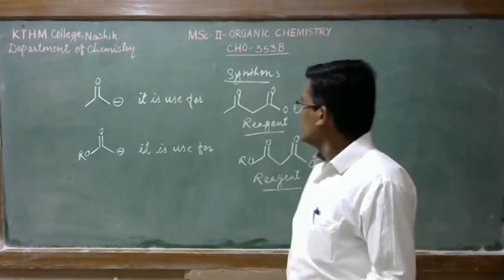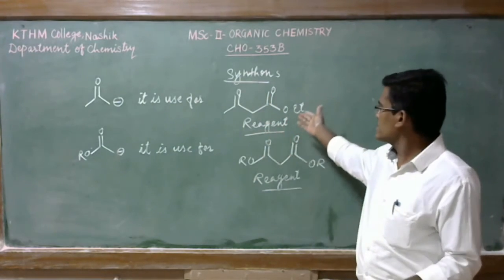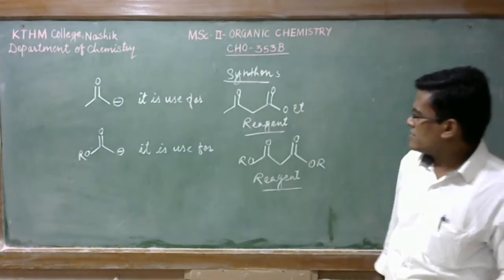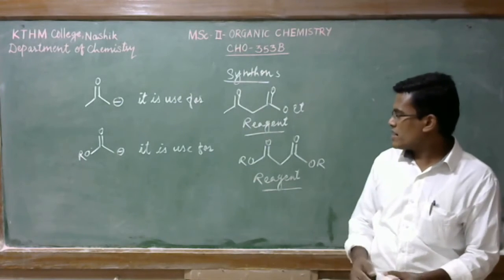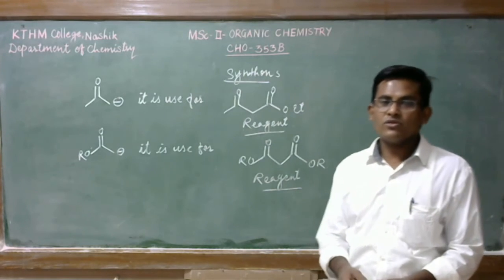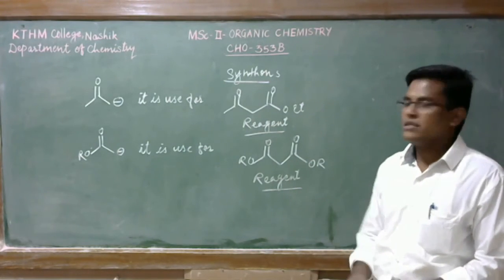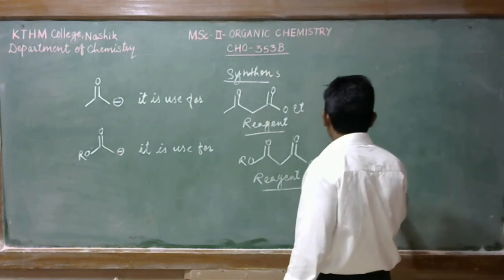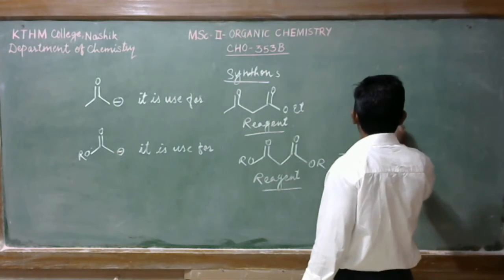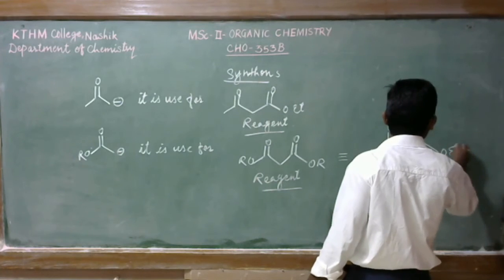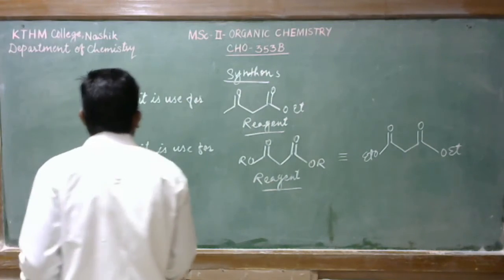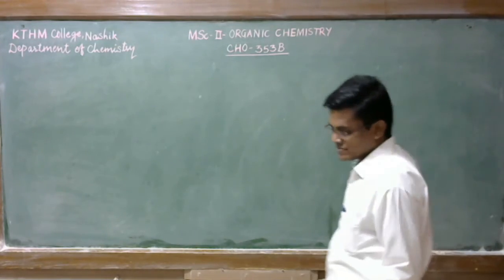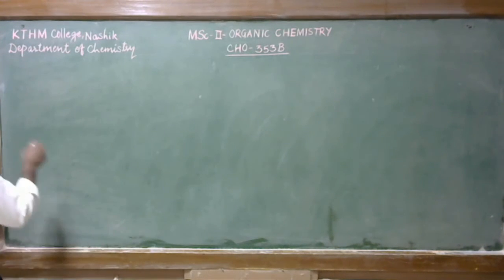So these two synthons — one synthon can be used for this reagent, acetoacetate, and this synthon having a negative charge on the carbon atom is used for malonate ester. Let us have the example which involves this chemistry. Here we can use diethyl malonate. Let us have the example which involves this synthon.